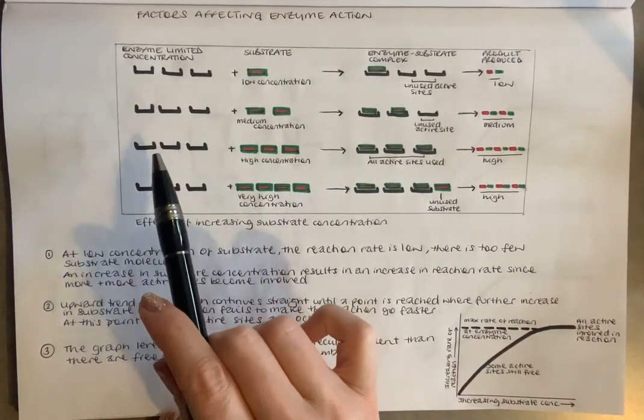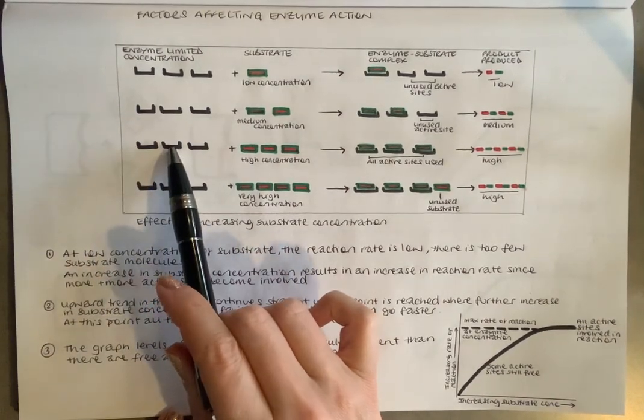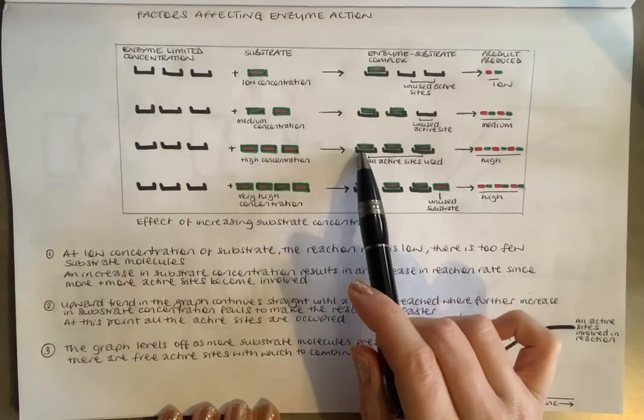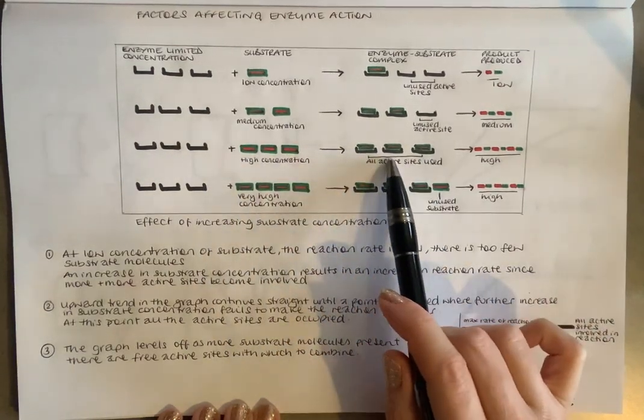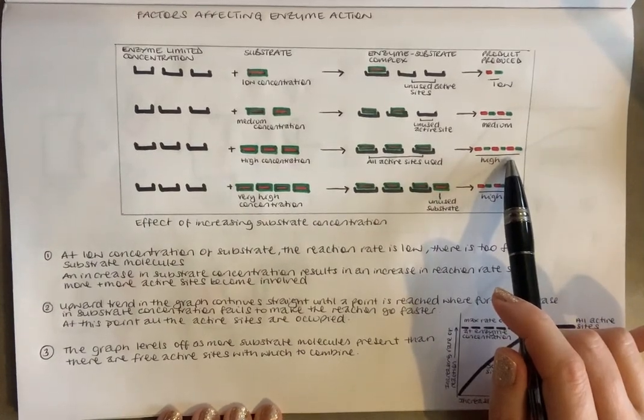But if we've got the same number of enzymes, so the same concentration of enzymes to substrate, then we are using all of our active sites up, which means we're getting a high level of products produced.